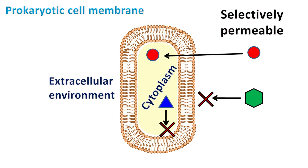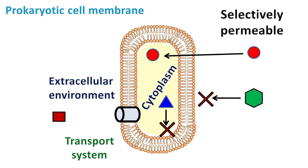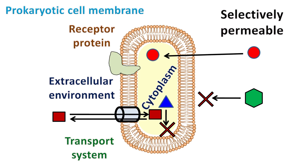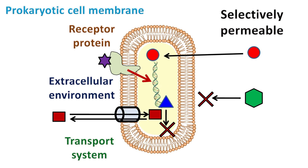For the import and export of selective molecules, the cell membrane has a transport system. The cell membrane also has receptor molecules that detect molecules in the surrounding environment. These receptor molecules are usually signaling molecules that signal the cell to switch on or switch off transcription of genes in response to the signal.